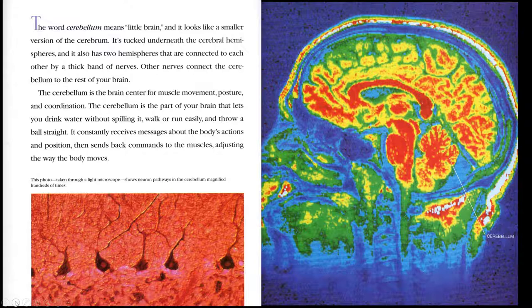The word cerebellum means little brain, and it looks like a smaller version of the cerebrum. It's tucked underneath the cerebral hemispheres, and it also has two hemispheres that are connected to each other by a thick band of nerves. Other nerves connect the cerebellum to the rest of your brain. The cerebellum is the brain center for muscle movement, posture, and coordination. The cerebellum is the part of your brain that lets you drink water without spilling it, walk or run easily, and throw a ball straight. It constantly receives messages about the body's actions and position, and then sends back commands to the muscles, adjusting the way the body moves.